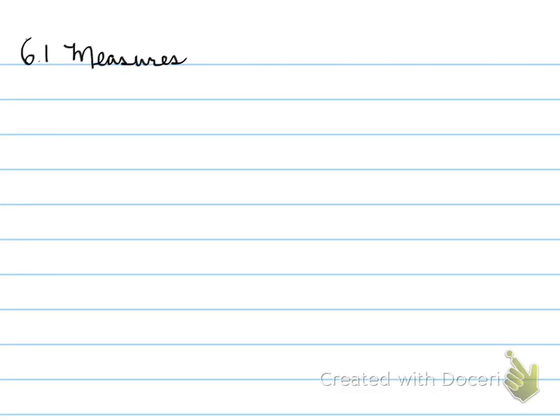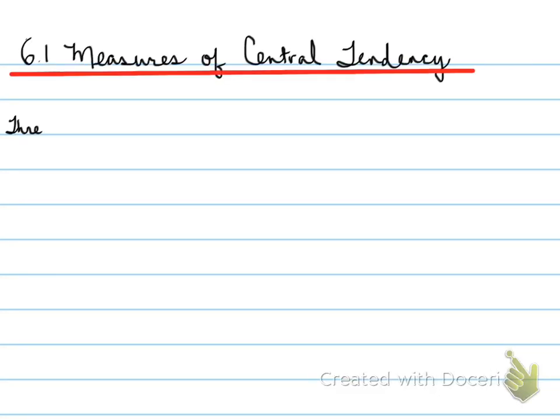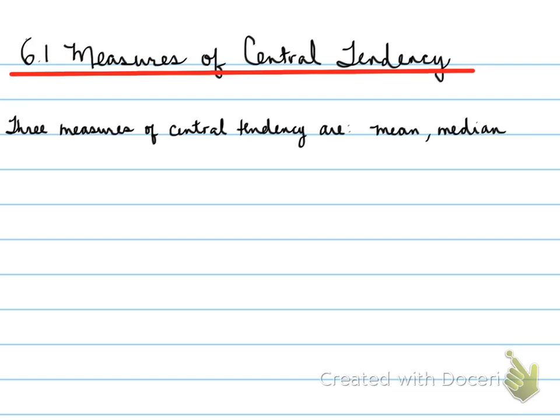6.1: Measures of Central Tendency. The three measures of central tendency are mean, median, and mode.